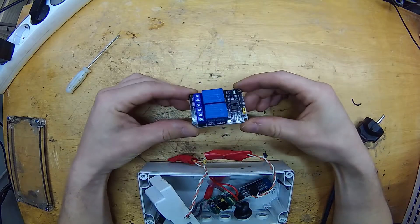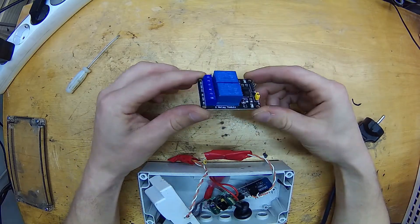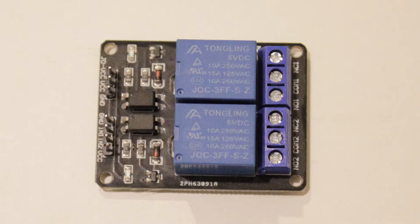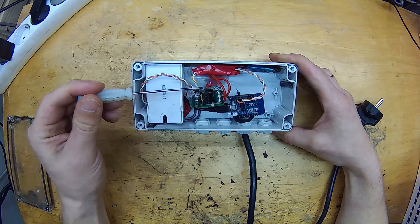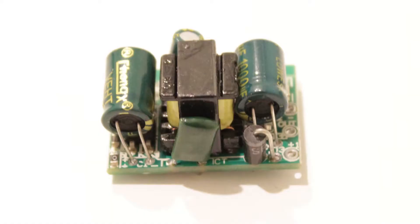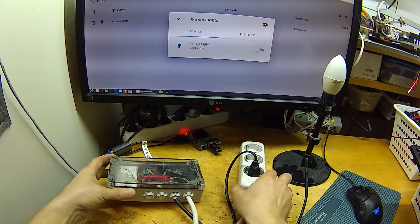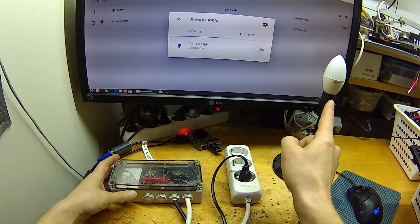Then you need a relay module for actually switching the high voltage power. This one has two channels, but I'm going to be using just one of those. And a 5V power supply for both of those devices. Also, an extension cord for connecting a lamp to this system.